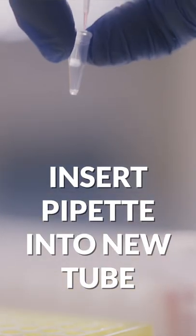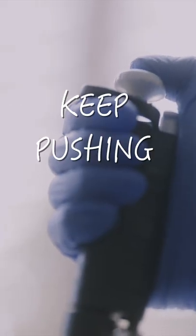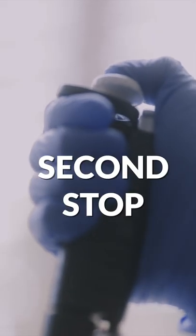Step 4: Insert pipette tips into new tubes at a slight angle, pushing the plunger past the first and second stops all the way down to make sure no liquid is left. Step 5: Eject the pipette tip into a sharps bin and you're done.